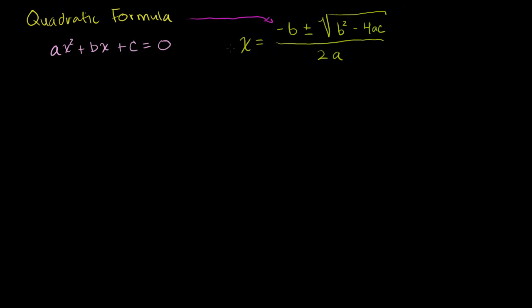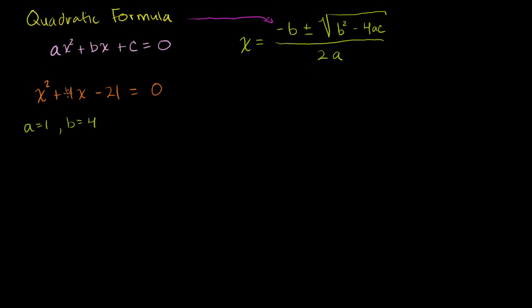So let's apply it to some problems. Let's start off with something we could have factored, just to verify that it gives us the same answer. Let's say we have x² + 4x − 21 = 0. In this situation, a is equal to 1 — the coefficient on the x² term is 1. b is equal to 4, the coefficient on the x term. And c is equal to −21, the constant term.